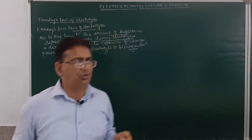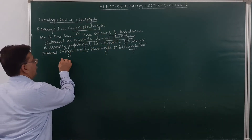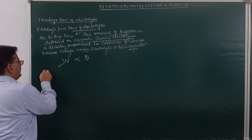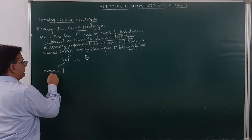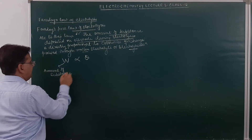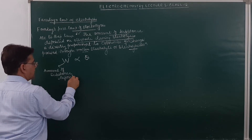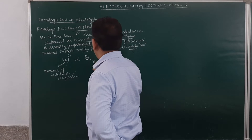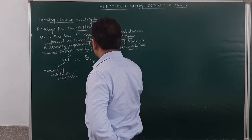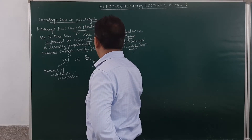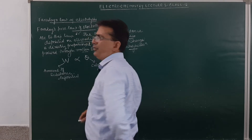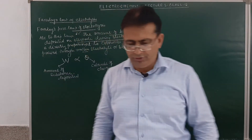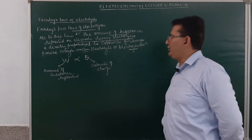Suppose we are carrying out the process of electrolysis — then on the electrode, the amount of substance deposited, W, will be directly proportional to Q, the coulombs of charge passed. Now, what is one coulomb? It is the ampere current passed in one second. Q = I × T.